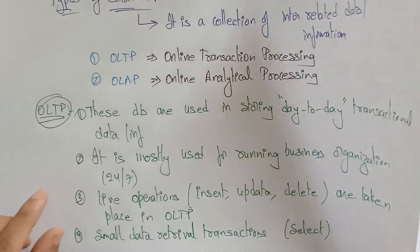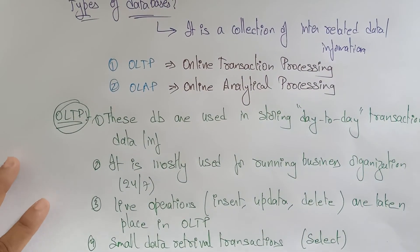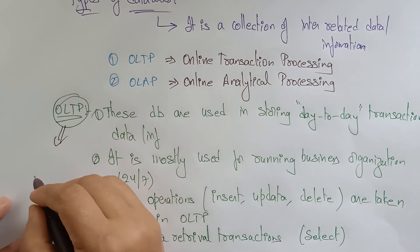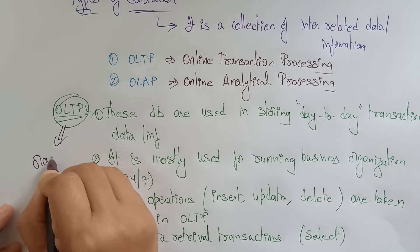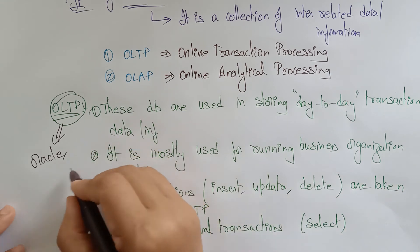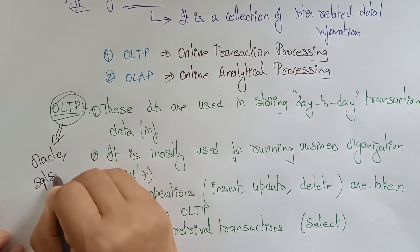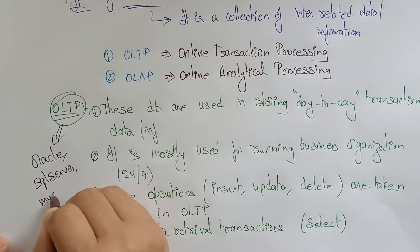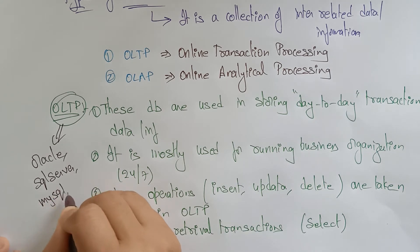When day-to-day transactional data needs to be processed, you use OLTP. Examples of databases used for OLTP include Oracle, SQL Server, and MySQL. There are many more databases that provide OLTP database support.